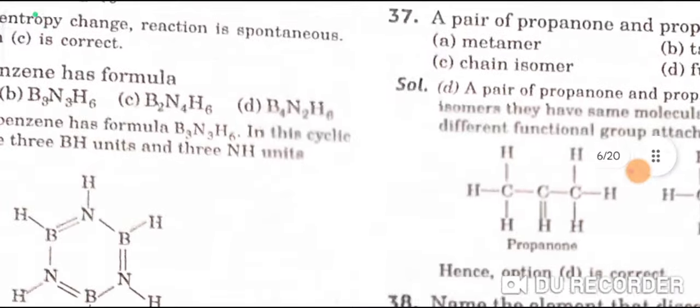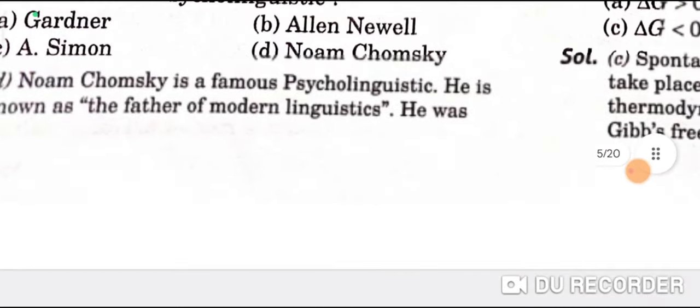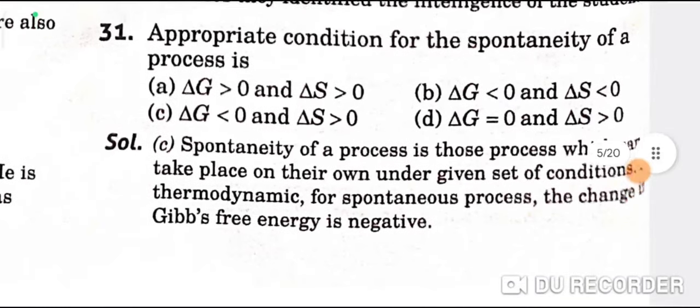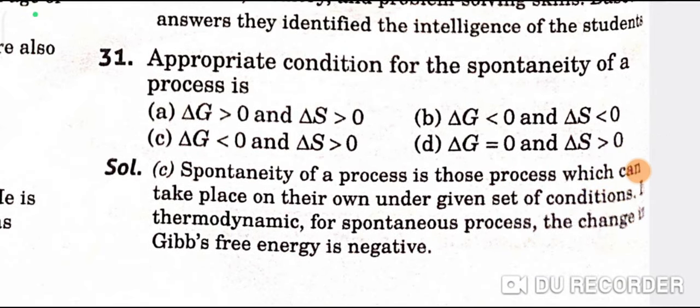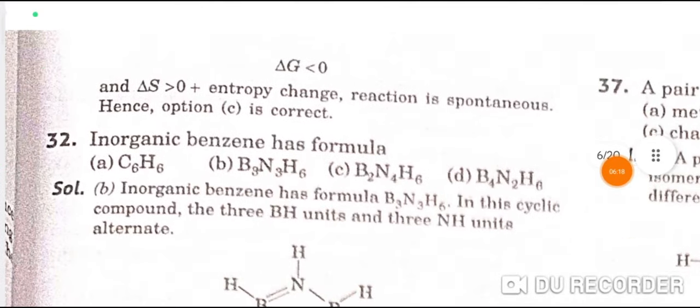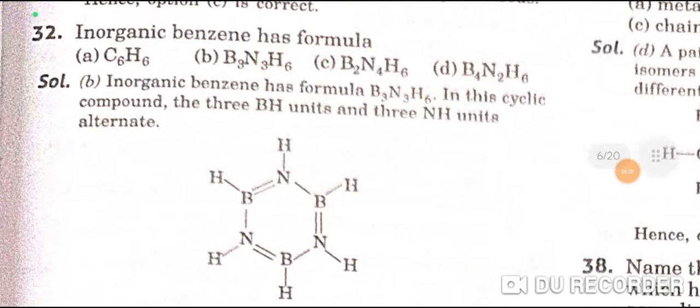Moving on to the chemistry section. Question 1: The appropriate condition for the spontaneity of a process is delta G less than zero and delta S greater than zero — C is the correct option. Question 2: Inorganic benzene has the formula B3N3H6.